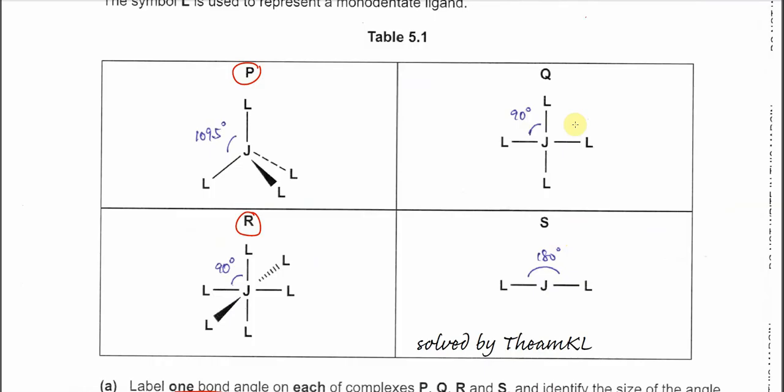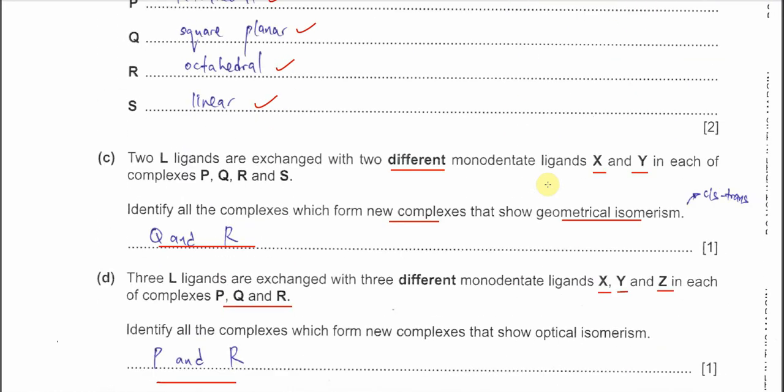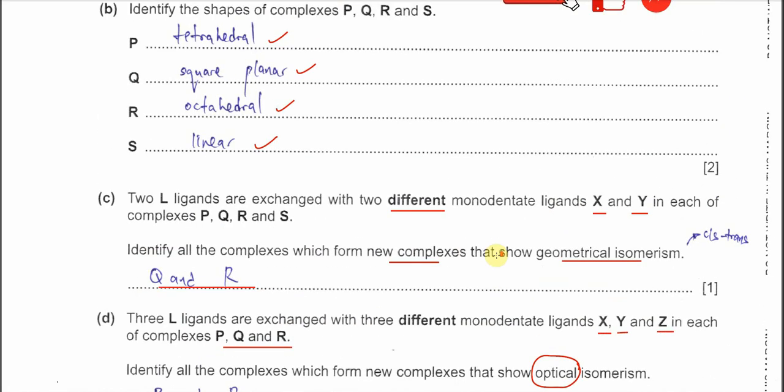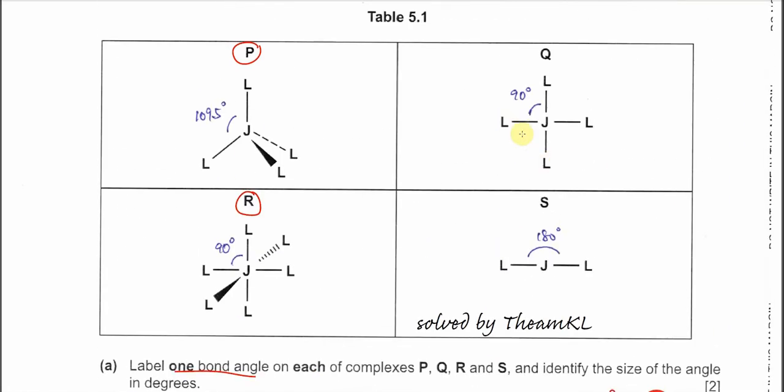This is optical isomerism. For part D, identify all complexes which form new complexes that show optical isomerism, meaning the mirror images are non-superimposable. So it cannot be the square planar. After all the X, Y, Z substitutes, if you put a mirror there, it will be superimposable. The answer is P and R.